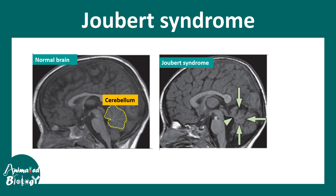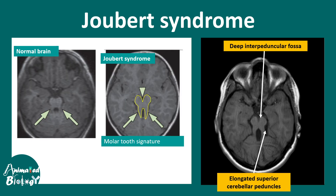In Joubert syndrome, which is another kind of posterior fossa malformation, there is a hypoplastic vermis. This is more distinct in the horizontal view, where one can see a molar tooth-like signature. This molar tooth sign is due to the deep interpeduncular fossa and the elongated superior cerebellar peduncles that create that molar tooth-like appearance.